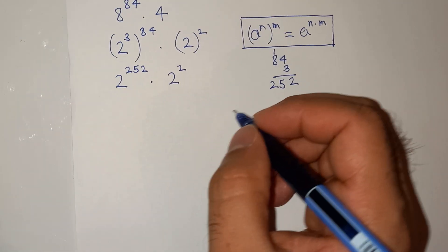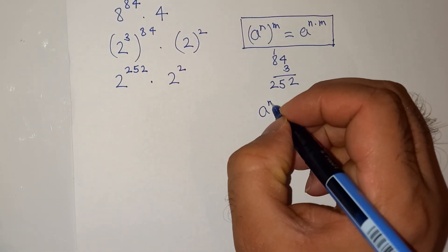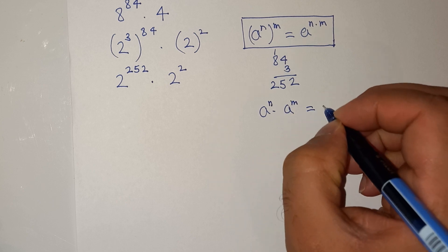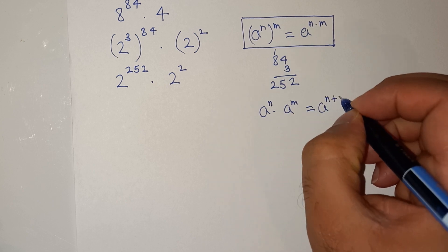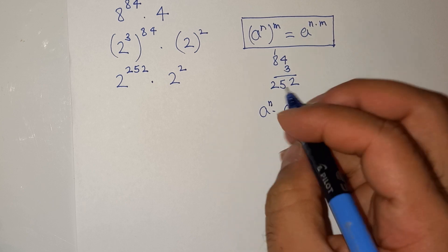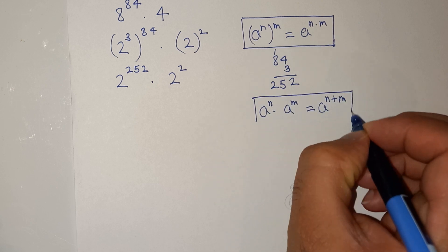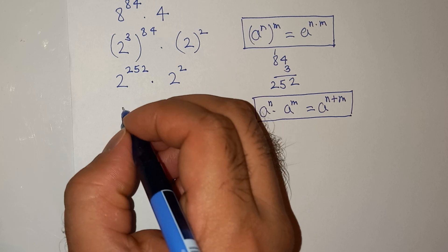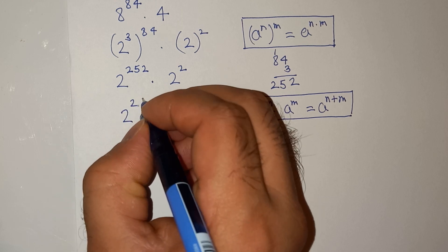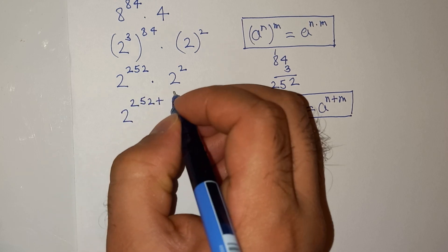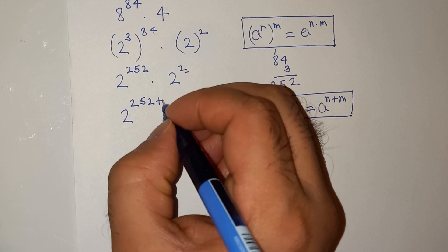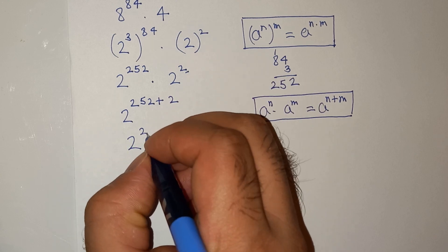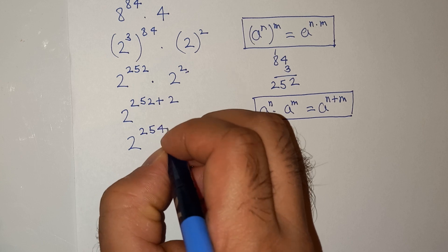We apply the exponential rule a power n multiplied by a power m equals a power n plus m. So our final answer will be 2 power 252 plus 2, which is 2 power 254.